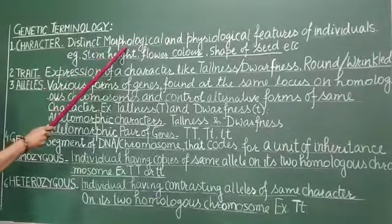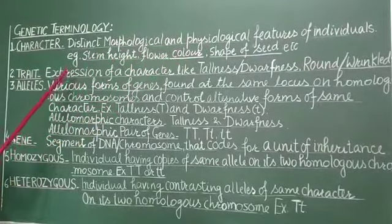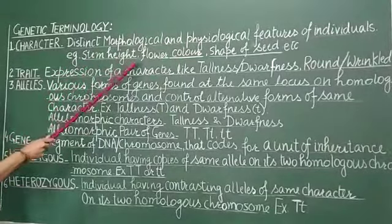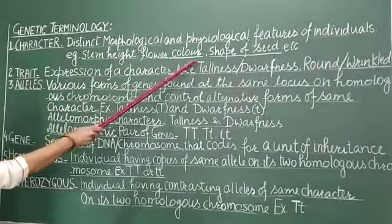Character is distinct morphological and physiological features of individuals like stem height, flower color, position of color, shape of seed, color of seed, etc.